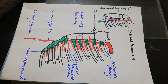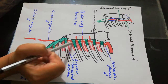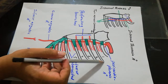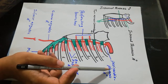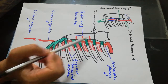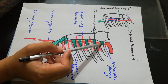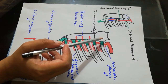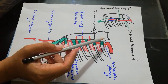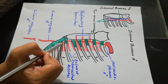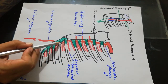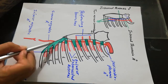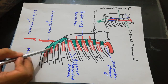We will now discuss the branches of the internal thoracic artery. It gives the pericardiacophrenic artery, which supplies the pericardium and pleura. It also gives mediastinal branches, which supply the mediastinum, the front of the pericardium, and the thymus. At the 6th intercostal space, it divides into 2 terminal branches: the superior epigastric artery and the musculophrenic artery.